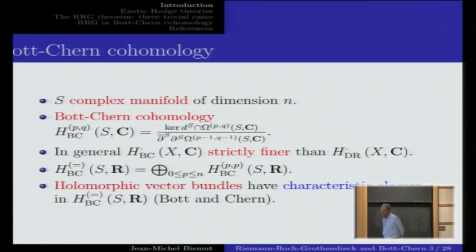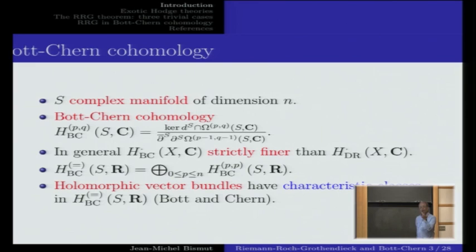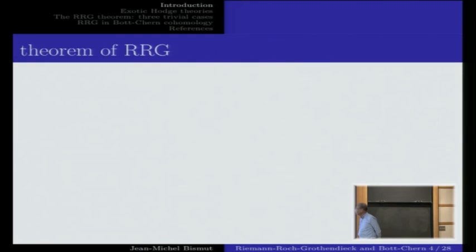A simple fact is that holomorphic vector bundles have characteristic classes lying in Bott-Chern cohomology. You take a holomorphic vector bundle, put a Hermitian metric on it, and look at the corresponding Chern-Weil representative of the associated characteristic class. The theory of Bott-Chern says that not only is this form a sum of (p,p)-forms whose cohomology class does not depend on the metric, but its Bott-Chern class also does not depend on the choice of metric — meaning the difference of two representatives can be written canonically as d-bar d of something.